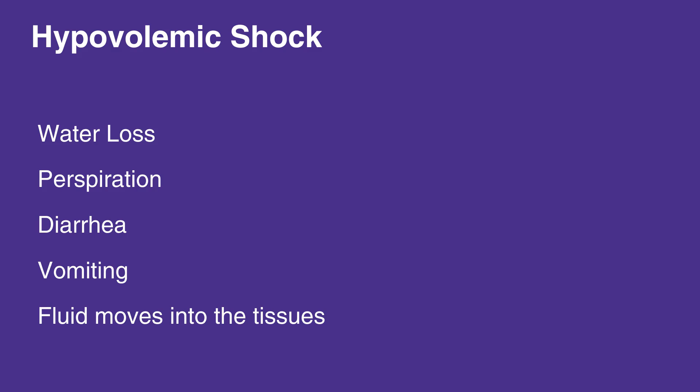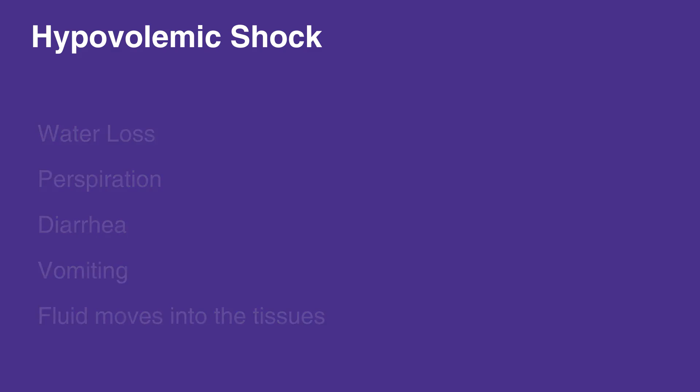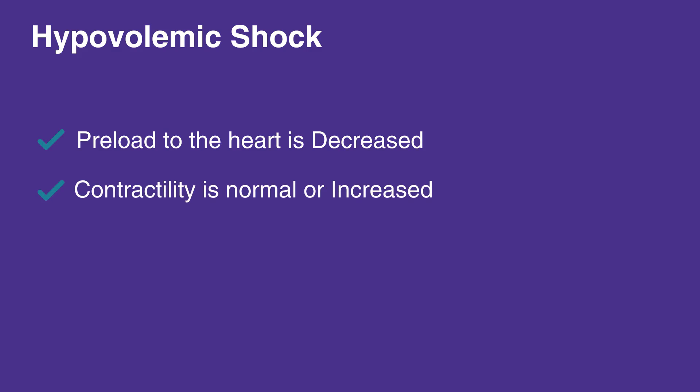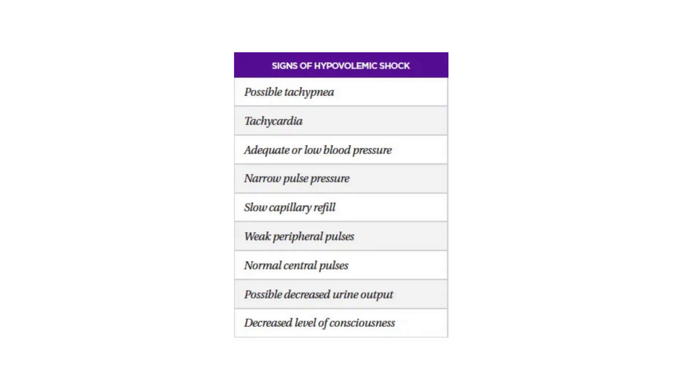In hypovolemic shock, preload to the heart is decreased — that is, there is less volume to fill the heart — though contractility is normal or increased. Likewise, afterload is increased since the vessels have constricted in an attempt to increase blood pressure.